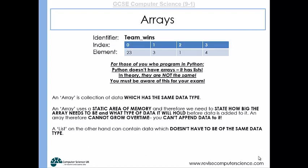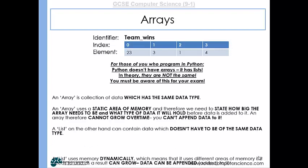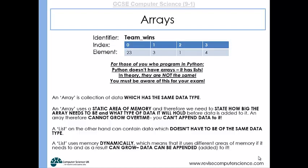A list, on the other hand, can contain data that doesn't have to be of the same data type. Lists use memory dynamically—it means they use different areas of memory if needed. As a result, they can grow. Data can be appended or added to it over time.